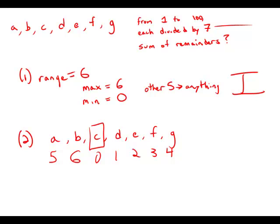It's very easy to take the sum of these 7 numbers. So Statement 2, which is a very rich source of information, is sufficient to answer the question. Statement 1 is insufficient, Statement 2 is sufficient. Answer choice B.